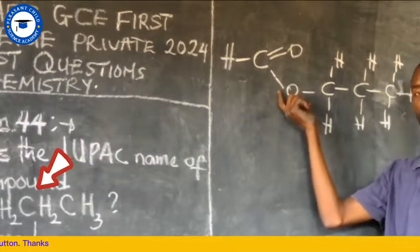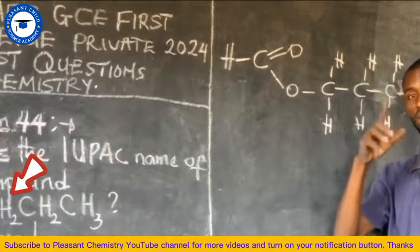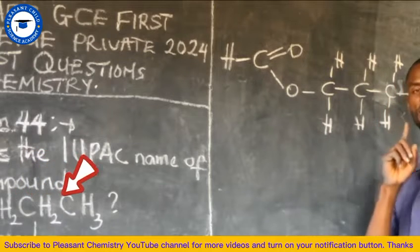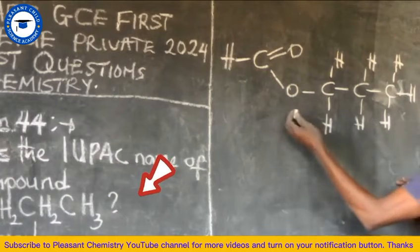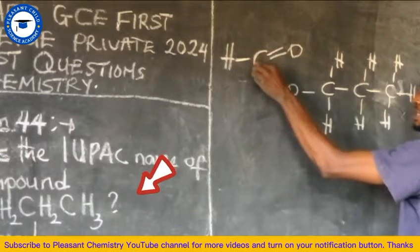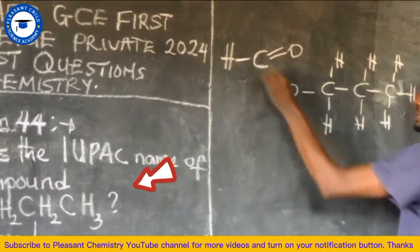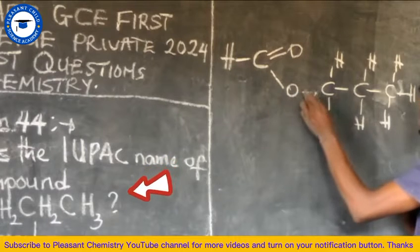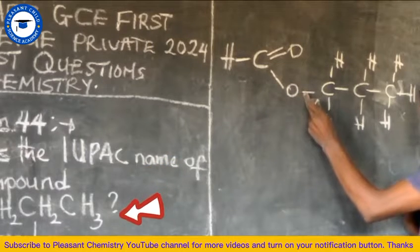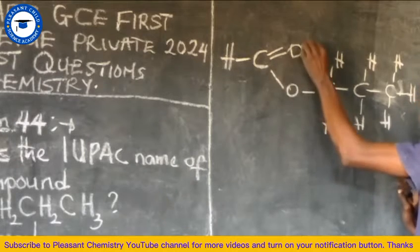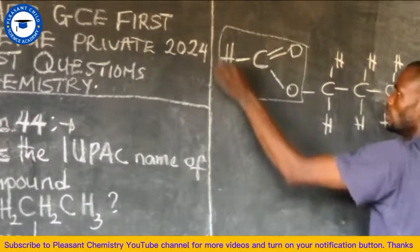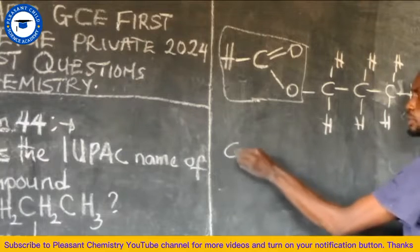Now, if you have to name this compound correctly, you should have mastered functional groups in organic chemistry. The compound from here, from this hydrogen to this place, is called ethanoate. And since it's only one carbon that exists in between this place, this angle, so this is called ethanoate.